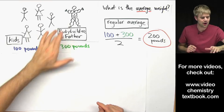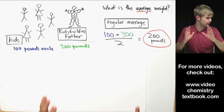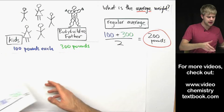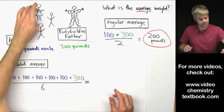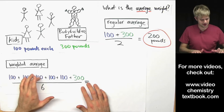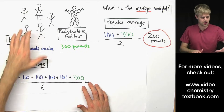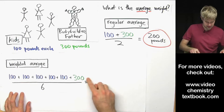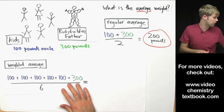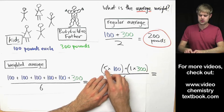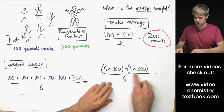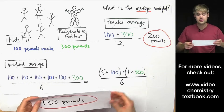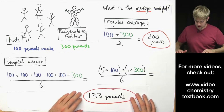A weighted average takes into account how many things in each group you have. To calculate the weighted average here, I take the fact that there are five kids weighing 100 pounds each: 100 + 100 + 100 + 100 + 100. That's five hundreds for the five kids. Then I add 300 for the bodybuilder's weight and divide by 6 because there are six people total. It's easier to express this as: (5 × 100 + 1 × 300) ÷ 6. When we work through this, we get 133 pounds — the weighted average.